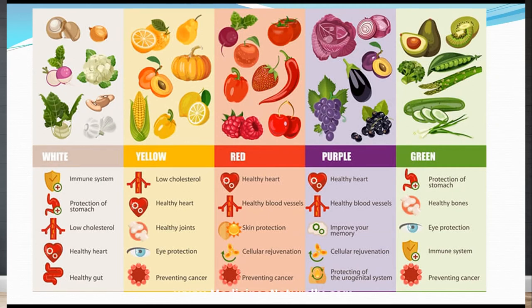Red-colored food like gooseberry, tomato, or beetroot helps to maintain the skin and aids in cellular rejuvenation, and they help prevent cancer. Purple-colored food like jamun or gooseberries helps to maintain healthy blood vessels, improves memory, helps in cellular regeneration, and protects the neurological system.